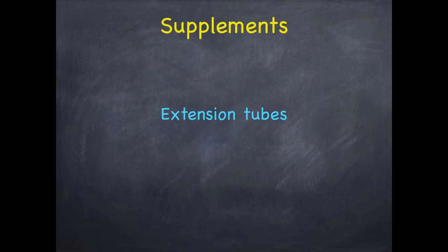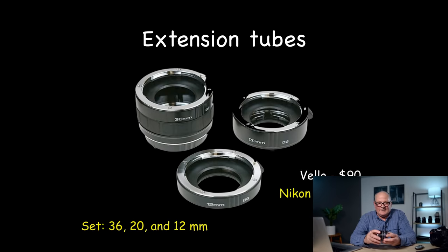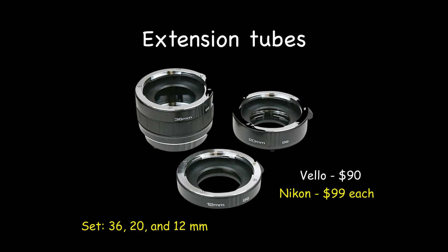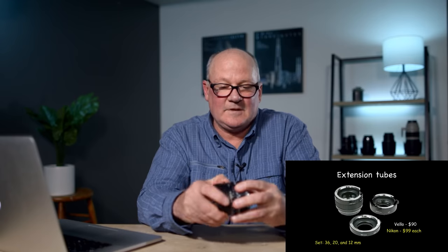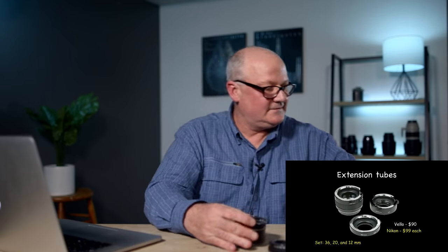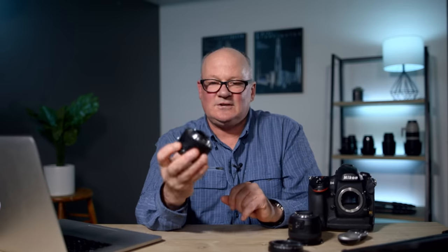Now let's jump into supplements and talk about extension tubes and close-up filters. I love extension tubes — here's why. They normally come in a set. Here's a set from Velo, only $90, with a 36mm tube. These are called extension tubes — they come apart and go in between the camera and the lens, allowing you to focus much closer. They're wonderful because you don't have to spend a lot — there's no glass in them, just straight tubes, so you don't suffer in quality.